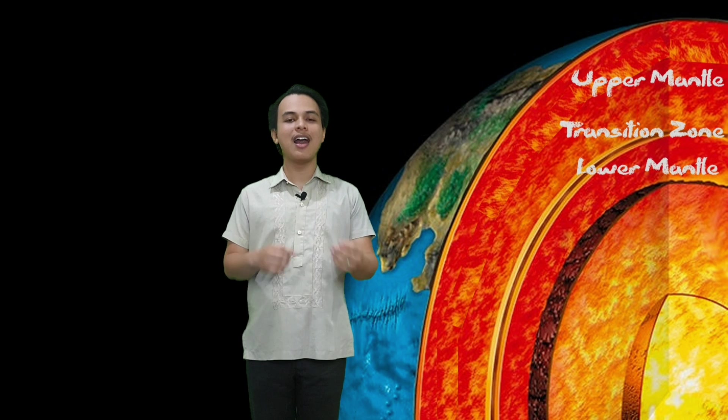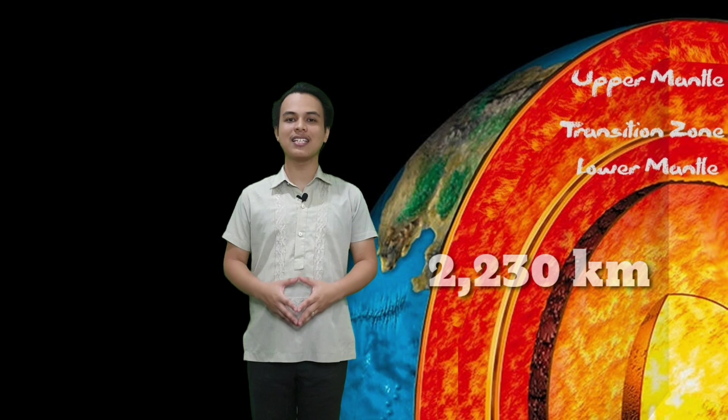Ang mantle ay may tatlong bahagi o regions. Ang upper mantle, transition zone, at ang lower mantle. Ang upper mantle ay may thickness na 670 kilometers. At ang lower mantle naman ay may thickness na 2,230 kilometers.